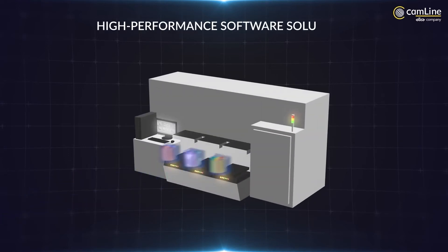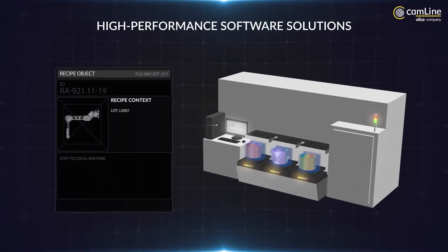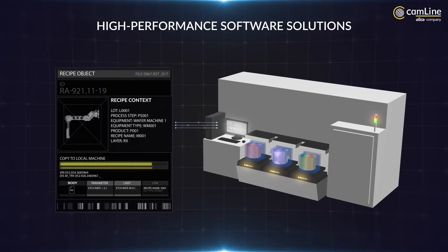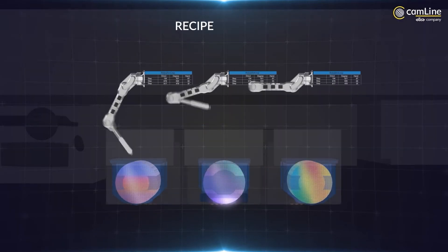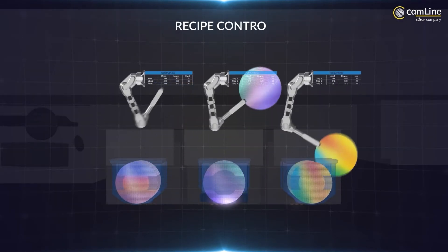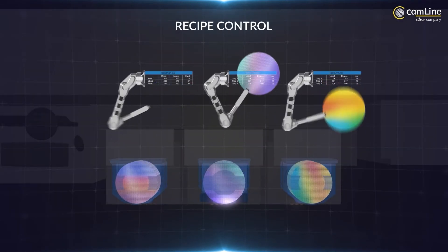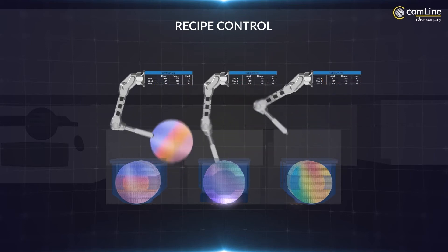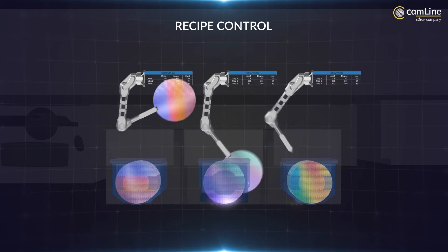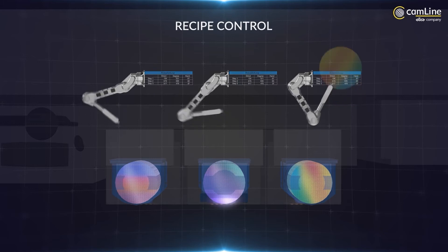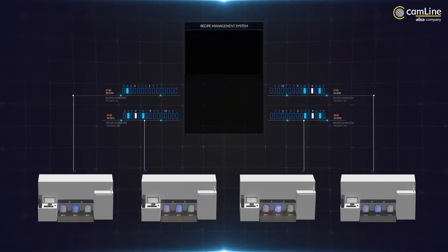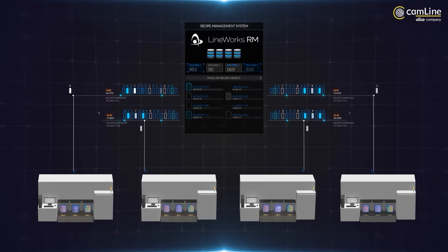With Camline's solution, you can have integrated management for your equipment having locally stored physical recipe files. To increase process integrity, you can redesign and standardize your business workflows that deal with recipe creation and management. You will be able to visualize and easily adjust the recipe content, and your recipes are accessible from anywhere.